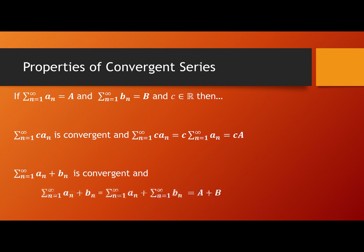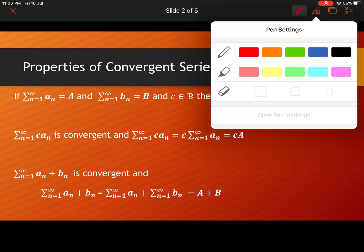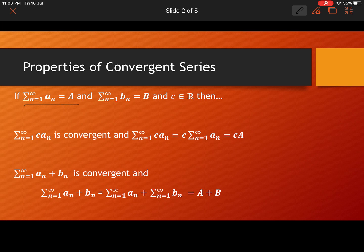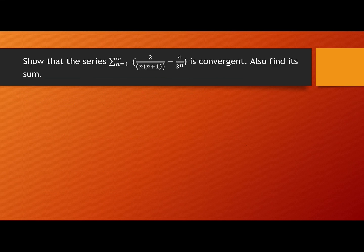Also, since sigma aₙ and sigma bₙ are both convergent, sigma n=1 to infinity of (aₙ + bₙ) can be written as sigma aₙ plus sigma bₙ, which equals A + B. We must note that these results apply only when sigma aₙ and sigma bₙ are both convergent.